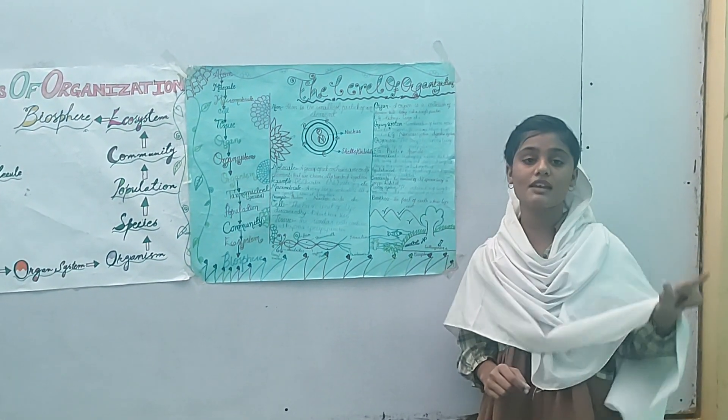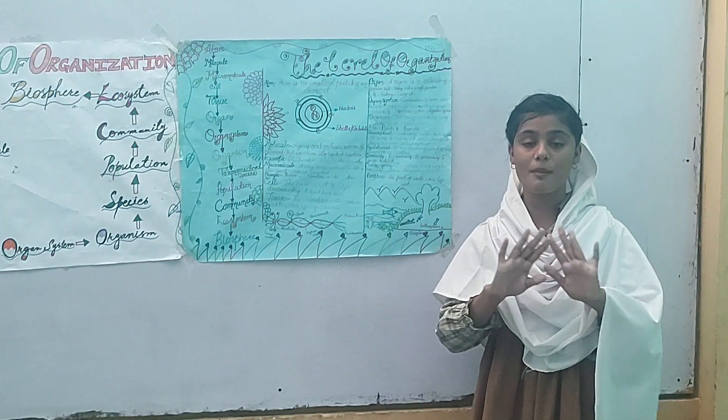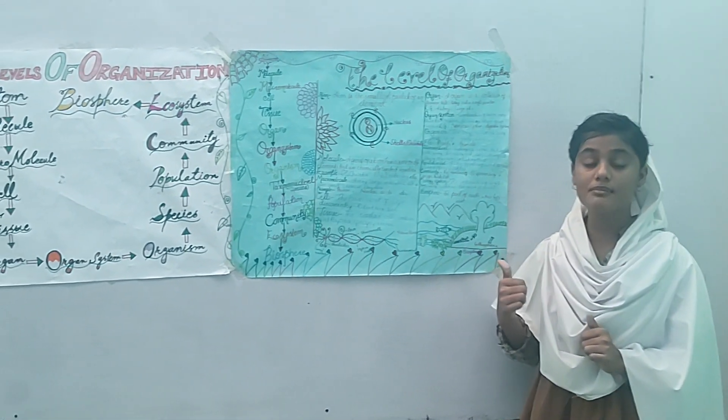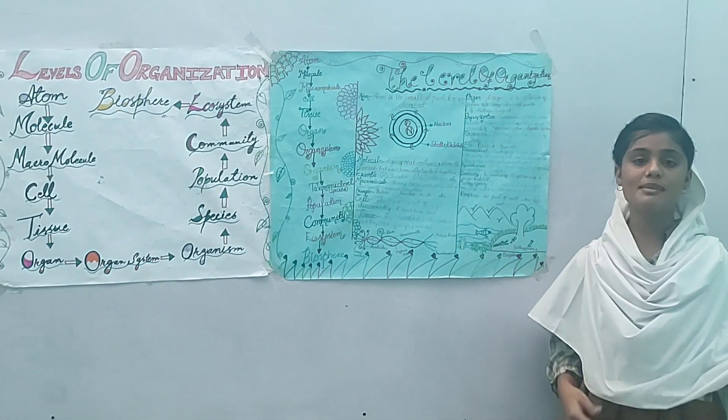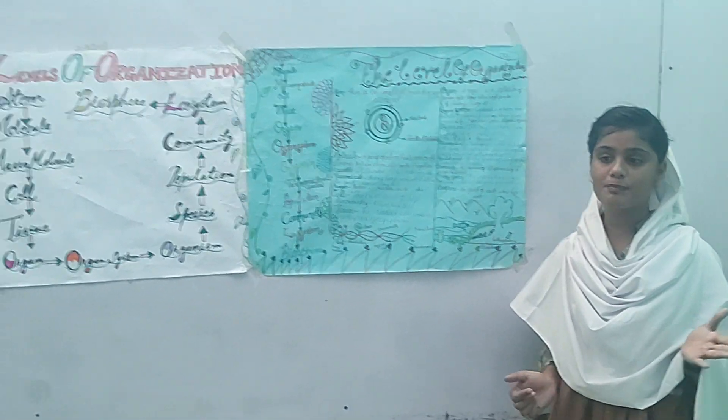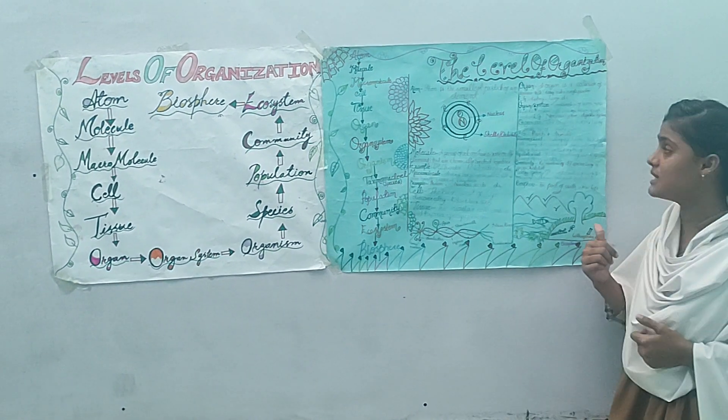Organism: a complete living being made up of many cells is called an organism. Organisms are multicellular. Examples include plants, fungi, and animals.